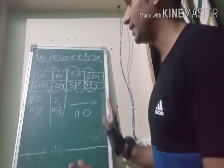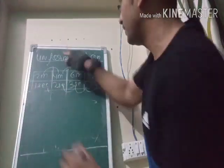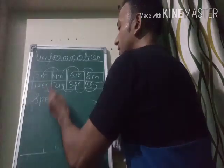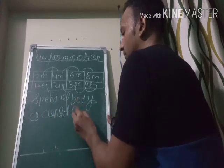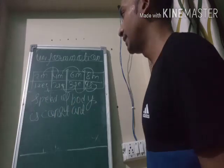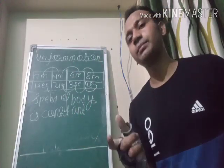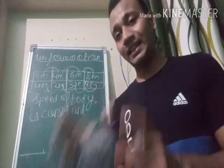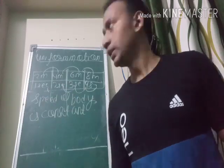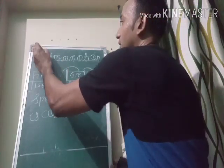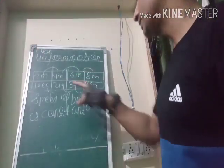So what is uniform motion? When a body covers equal distance in equal intervals of time, that motion is called uniform motion. In other words, the speed of the body is constant. In uniform motion, the speed of the body is constant. You can write the definition in your own words as long as you stick to the key concept.